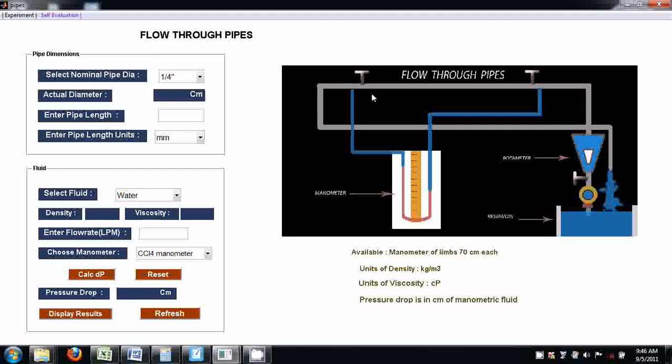These are the pressure tappings connected across the pipe. This is the manometer, CCL4 for manometer. The pressure drop can be read as the difference between these two limbs. Now the experimental procedure.